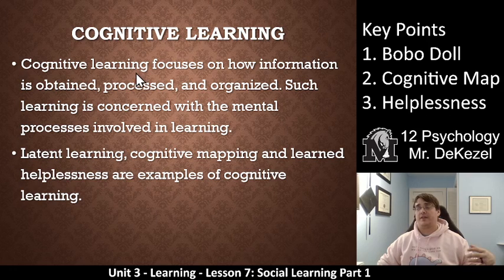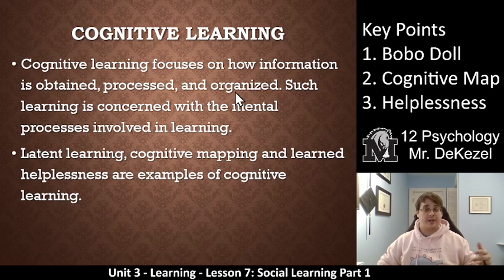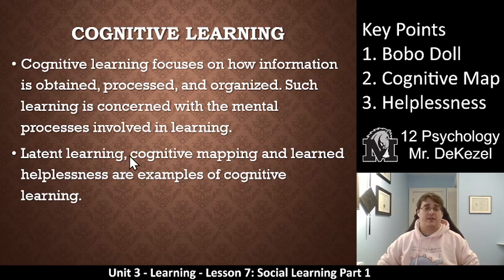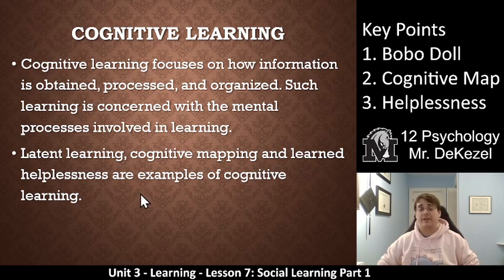Cognitive learning focuses on how we obtain information, process it, and organize it — a lot like perception. Such learning is concerned with mental processes, not just behaviors. Latent learning — learning something without realizing you're learning it — cognitive mapping, and learned helplessness are all examples of cognitive learning.